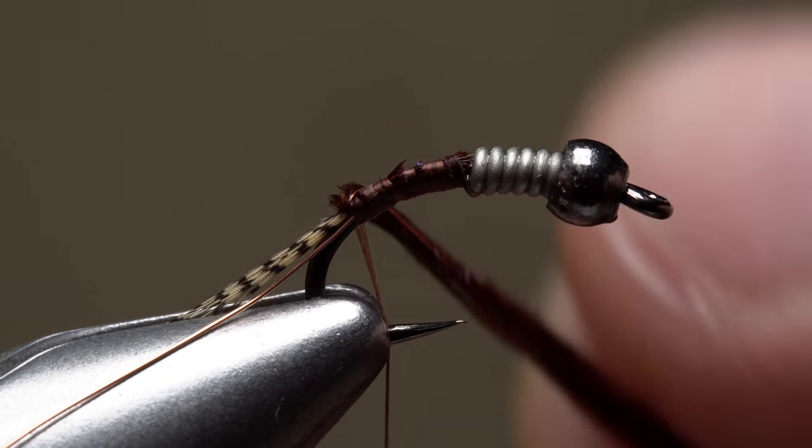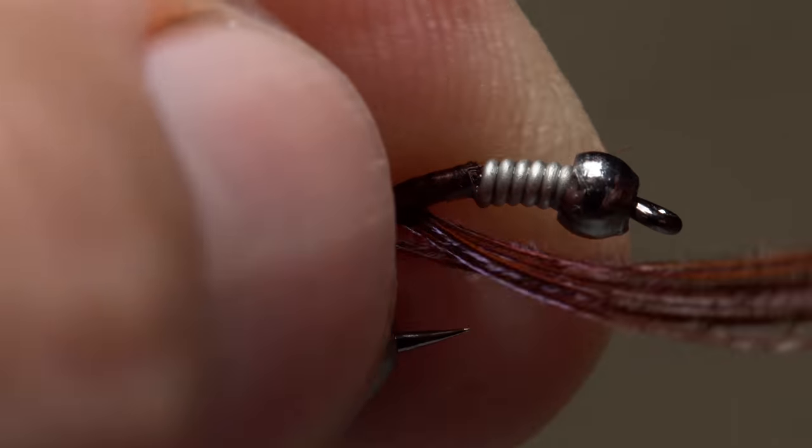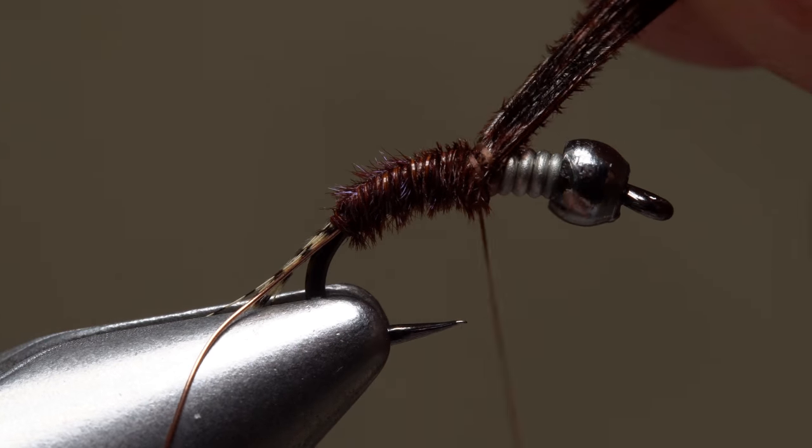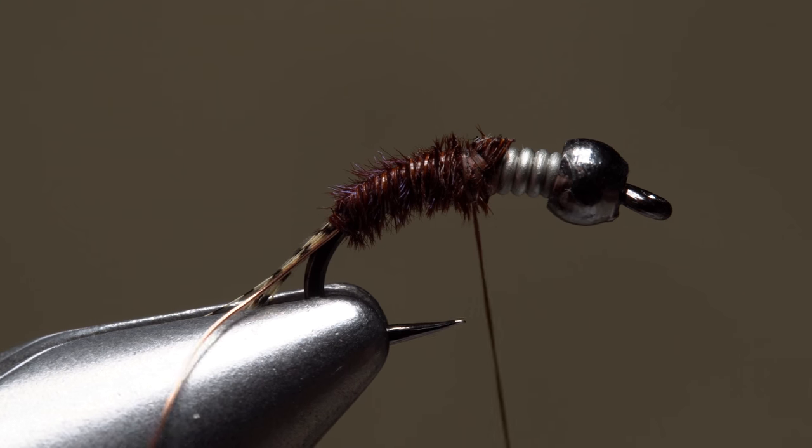Get hold of the fibers and start wrapping them around the hook shank behind your tying thread. This will help them to stay together as you wrap. When you reach the weight, anchor the fibers with a few tight turns of tying thread then snip the excess off close.